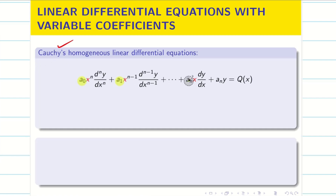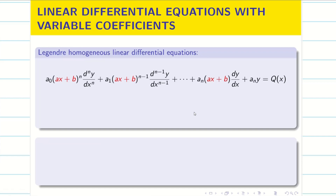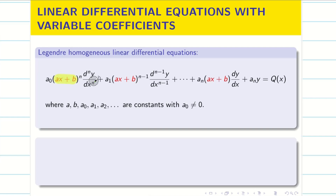Here, a0, a1, etc., an are the constants and we have x^n, x^(n-1), x^(n-2), etc., x as the variable coefficients. Now we are going to deal with Legendre homogeneous linear differential equation. What is the difference? In Cauchy, we have x. In Legendre, x is replaced by ax + b. Everywhere x is replaced by ax + b, we get a Legendre homogeneous linear differential equation.